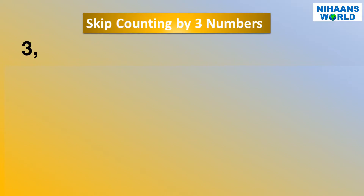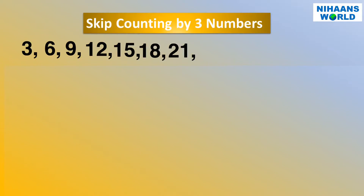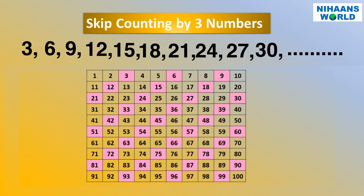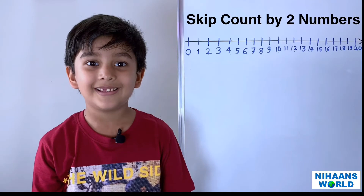Skip counting by three: the numbers are three, six, nine, twelve, fifteen, eighteen, twenty-one, twenty-four, twenty-seven, thirty, and so on.